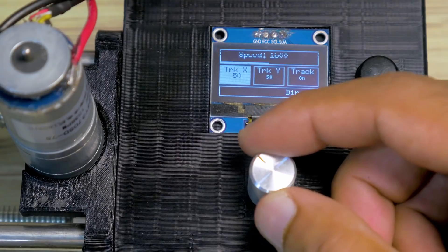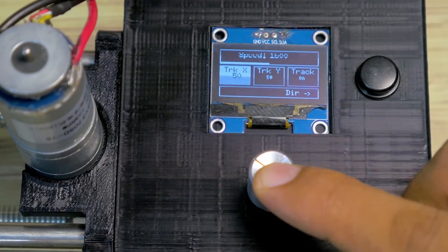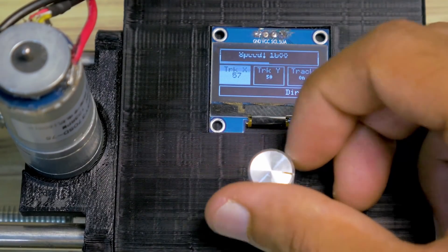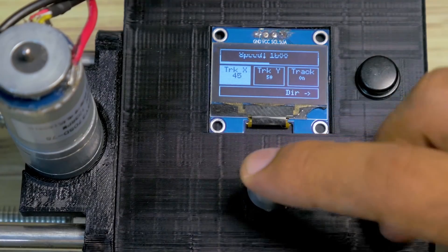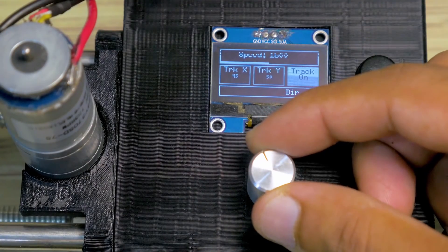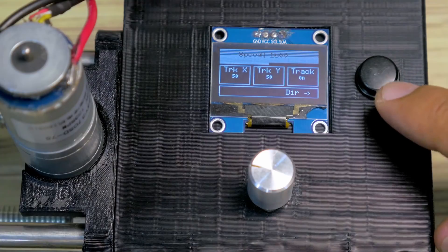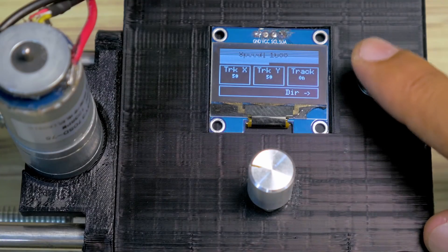To select and configure any of these items, you simply have to click on the rotary encoder. Once you click, you can rotate the rotary encoder to adjust the value, and then click again to set the value and return to the main menu. Once ready, simply press the go button next to the screen, and the slider does the rest.